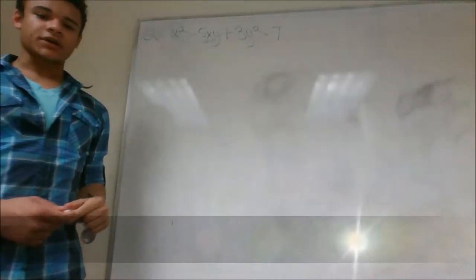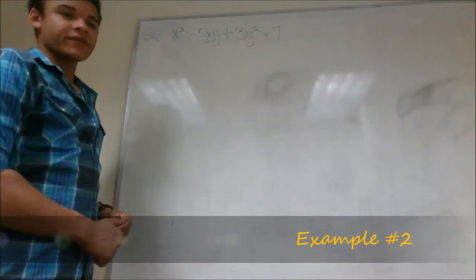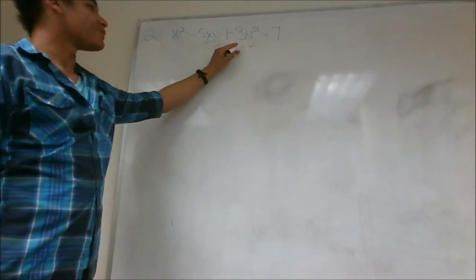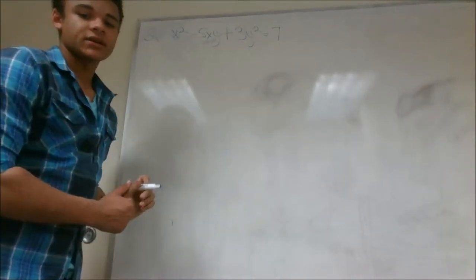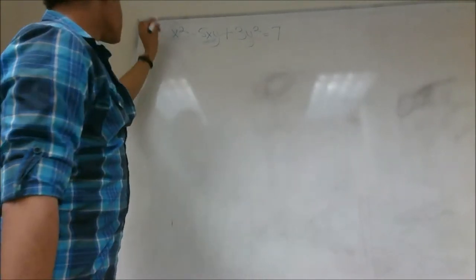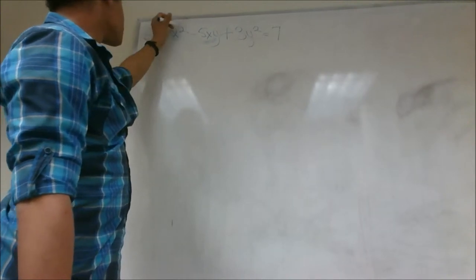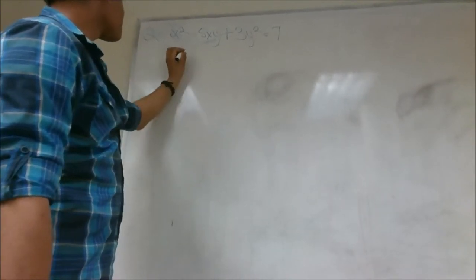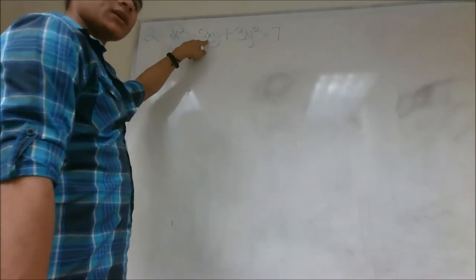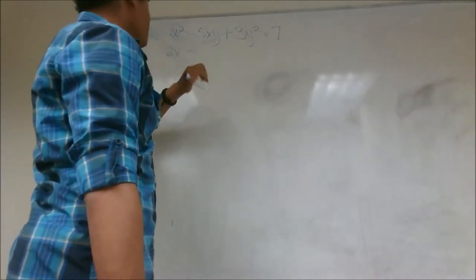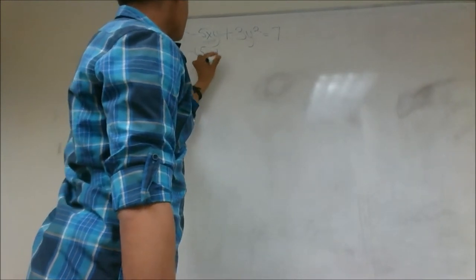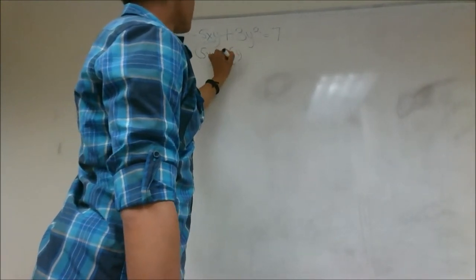Hi everyone. For our second example for implicit differentiation, we have the function that we're going to differentiate here. It is x squared minus 5xy plus 3y squared equals 7. So like we said, our first step is to differentiate each of the terms in the equation. So here we use the power rule. This is 2x minus, now to differentiate this, we have to use the product rule. So this is your u prime v plus u v prime. So it's going to come out to be 5xy prime plus 5y.